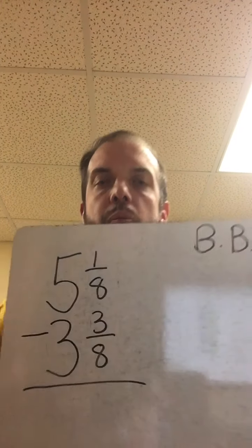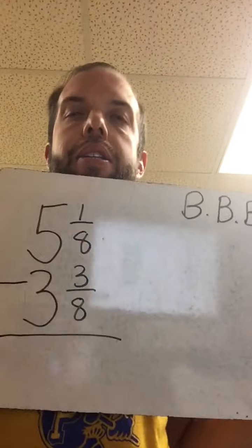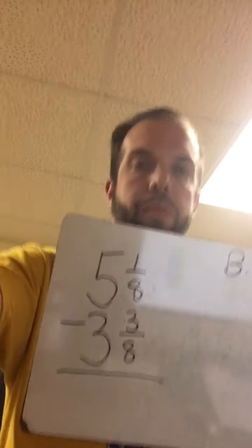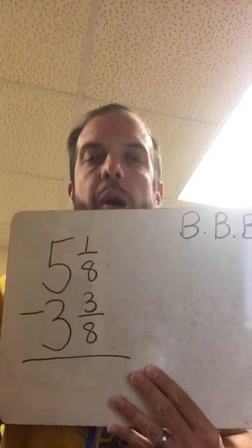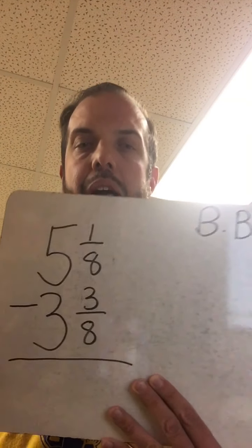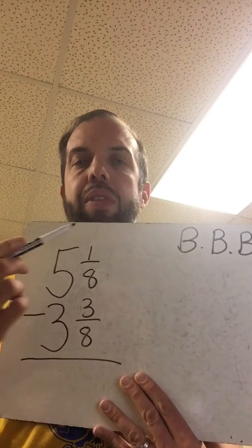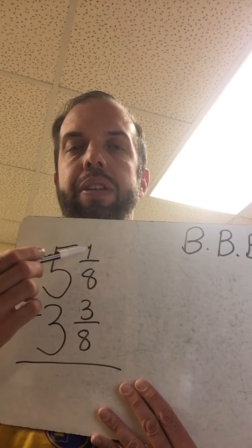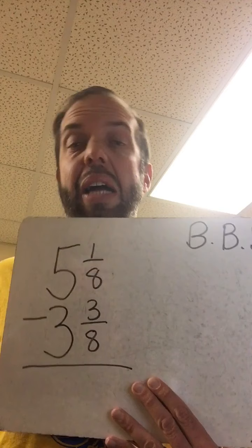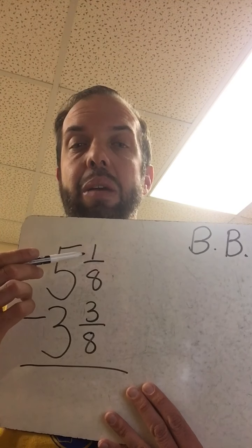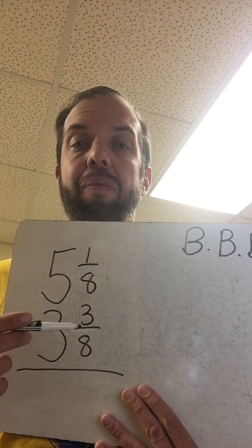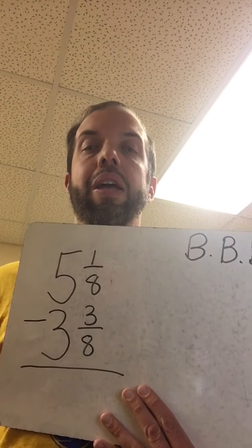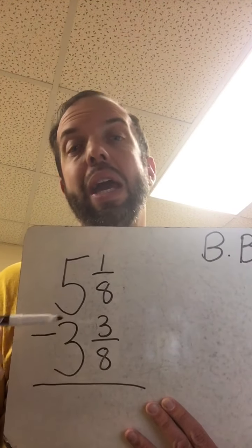Alright, so this problem is in your notes. It's 5 1/8 minus 3 3/8. Back my camera up here. Oh my gosh, my desk is a mess. Alright, now I'll talk about this in a moment, but we've done some subtraction earlier in the week with mixed numbers where if the numerators in our fractions, if it's like 7/8 minus 3/8, we just subtract. It's 4/8. But when you see this, guys, when we try to subtract our fractions here, 1/8 minus 3/8, the bottom fraction is bigger, okay? And just like in whole number world, if the bottom number is bigger, we have to borrow.